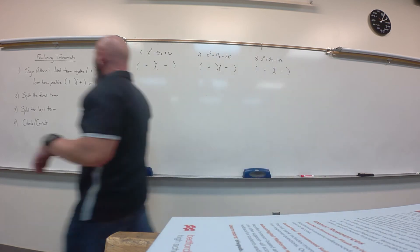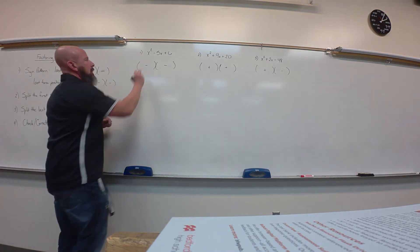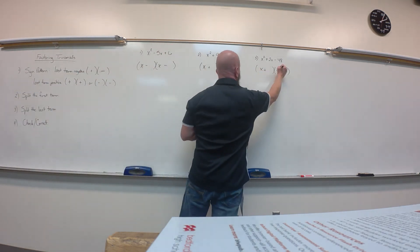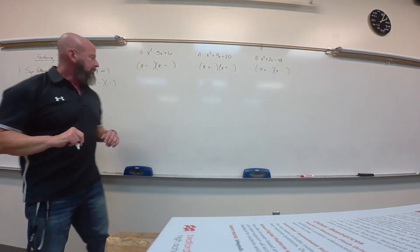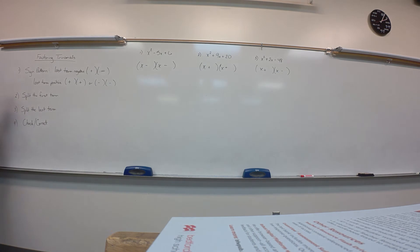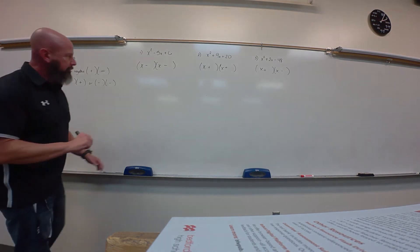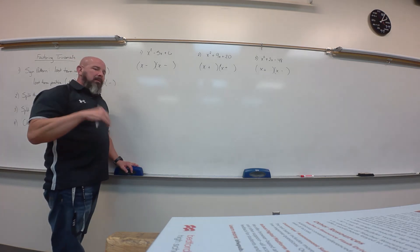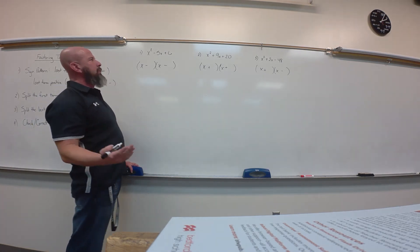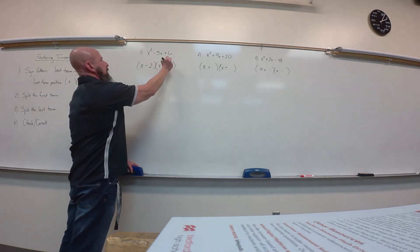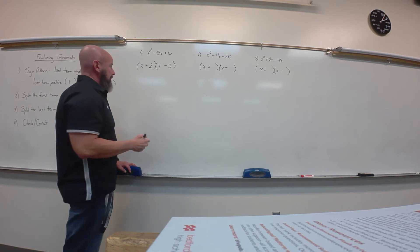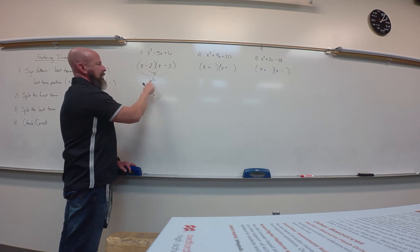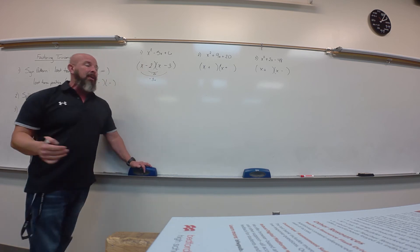Now, split the first term: x² means x and x, since x times x is x². Splitting the first term should be the quickest part. For the last term of the first example, I need factors that multiply to 6: that's 1 and 6, or 2 and 3. I'll guess 2 and 3. I check outside: negative 3x, inside: negative 2x. Negative 3 and negative 2 is negative 5 — that's what I wanted. Factored.